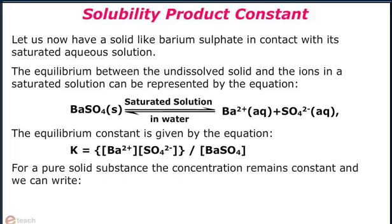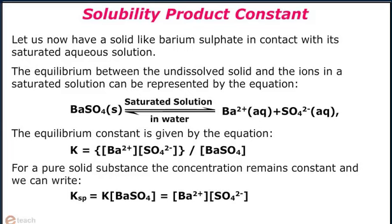For a pure solid substance, the concentration remains constant and we can write: Ksp equals K times concentration of BaSO4, which equals concentration of Ba²⁺ multiplied by concentration of SO4²⁻. Here Ksp is the solubility product constant, or simply the solubility product.